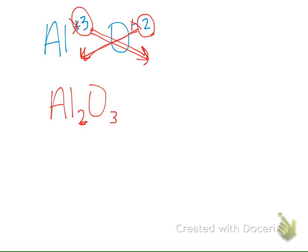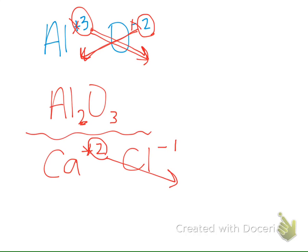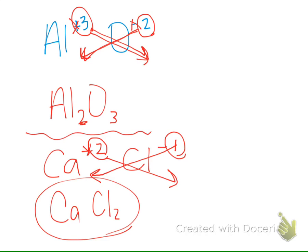Let's apply the shortcut to the first example: calcium and chloride. CaCl — calcium was plus two, chloride was minus one. Drop the signs, bring the two down for chloride, bring the one down for calcium. We get Ca1Cl2, but we don't ever write the subscript 1, so the final answer is CaCl2. Subscripts always go on the bottom in your final answer — you don't ever write an element squared.